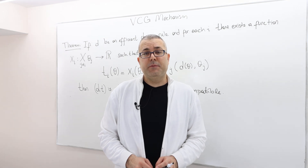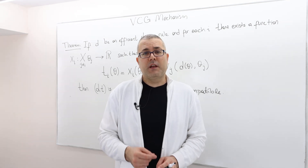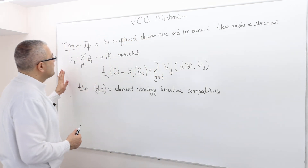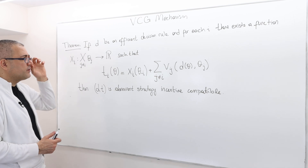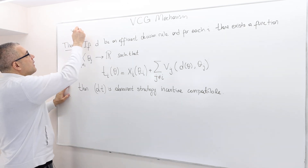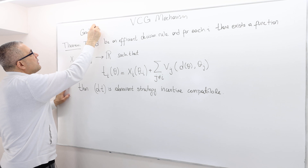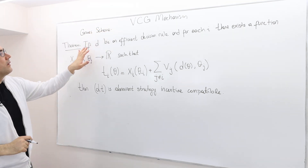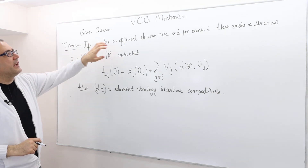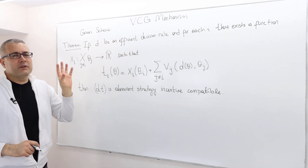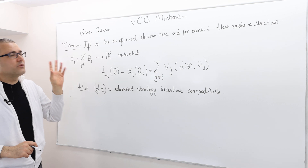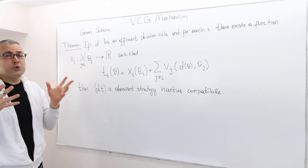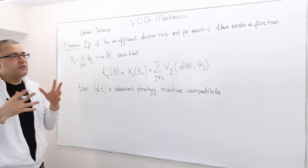Let's talk about VCG mechanisms, also known as Vickrey-Clarke-Groves mechanism. I'm going to start with a theorem, also known as a Groves scheme. It says the following: suppose D is an efficient decision rule. The decision rule is efficient if it maximizes the sum of utilities — the sum of individual utilities.